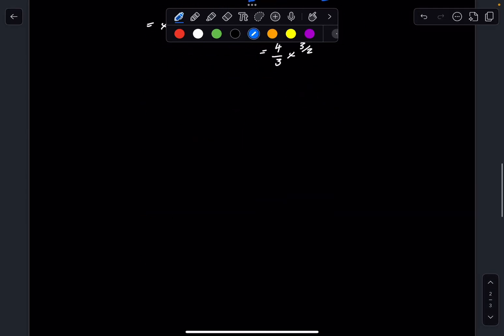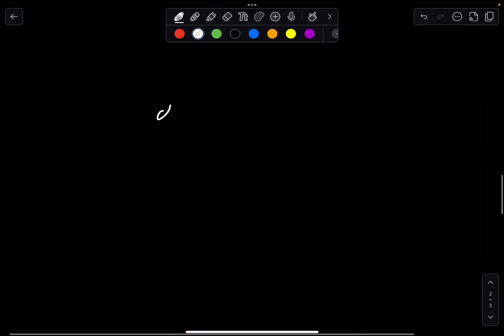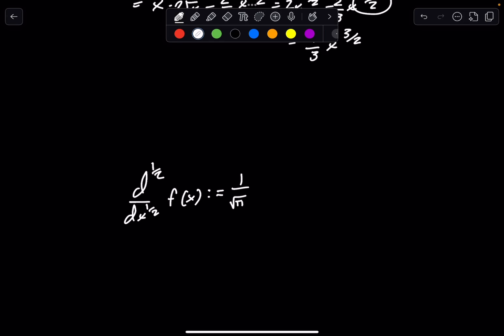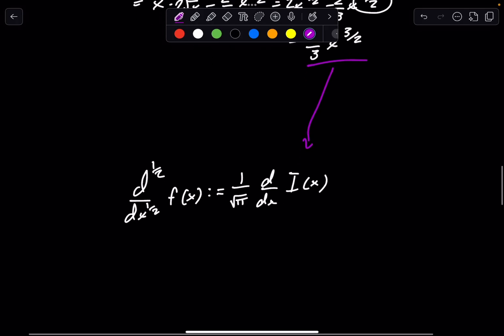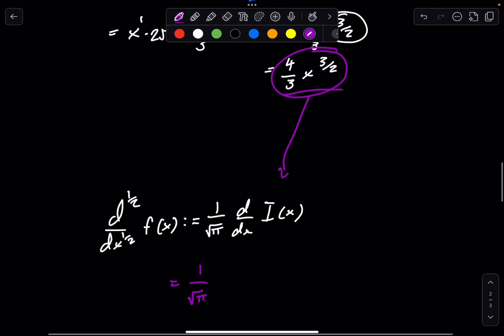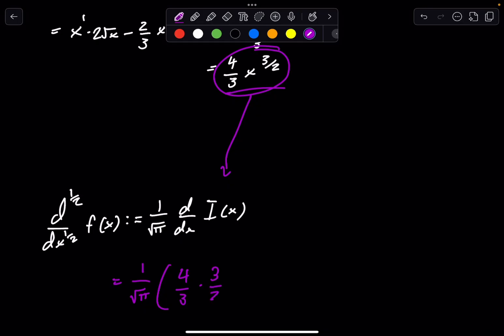That means, we had our original problem statement, we had this, I'll copy it down, just like this, d^(1/2)/dx^(1/2) of f(x) is defined as such, 1 over √π, d/dx, I(x). And now that we have our I(x), which is this, we can plug that in. So now, we can say that this is equal to 1 over square root of π. What's the derivative of this? I'm sure all of you know how to do this. You can pull down the exponent, you have 4/3 times 3/2 times x to the 1/2, just like that.